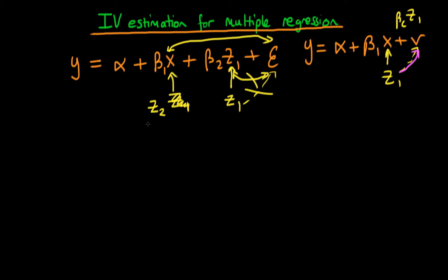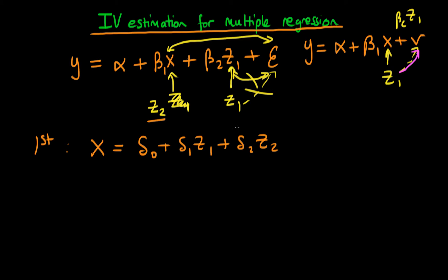So what are the conditions on z2 that make it a good instrument in the multiple regression framework? The first stage regression we run is a regression of x on delta 0 plus delta 1 times z1 plus delta 2 times z2. This is the correct form of the first stage regression to use in the multiple regression framework. Our condition on z2 is that the coefficient delta 2 in this first stage regression must be non-zero — in other words, after parceling out the effects of all other exogenous variables, z2 must still have some effect.